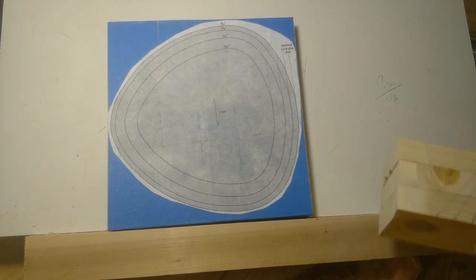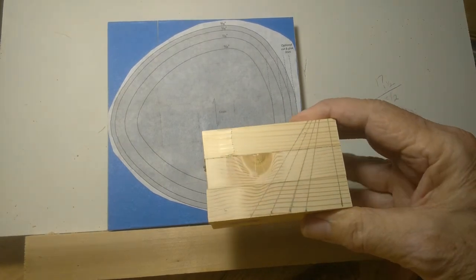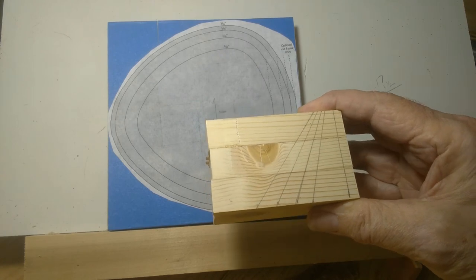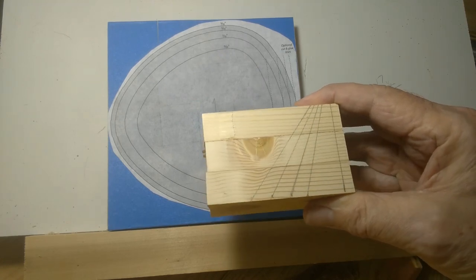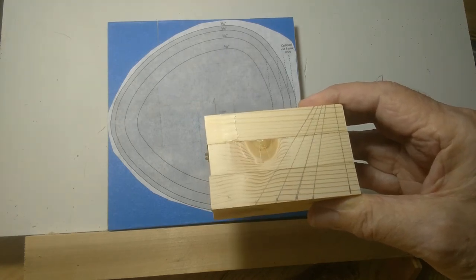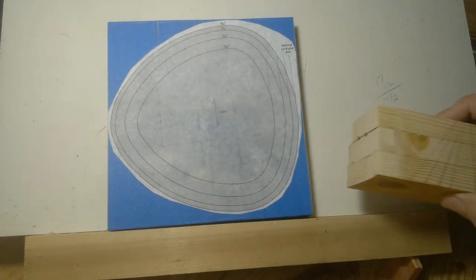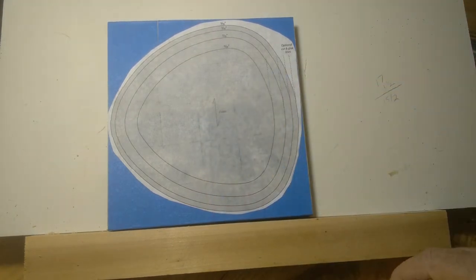Then you take, since I've got the angle on there now, and put that on the saw and adjust the blade to that angle. That's supposed to be the proper angle within a half a degree, he says, to get the angle on each ring.